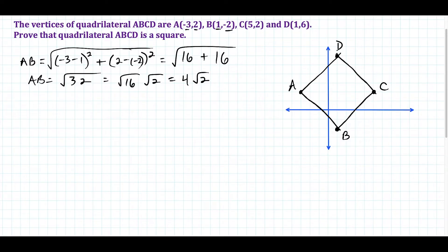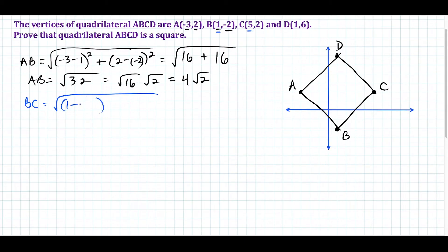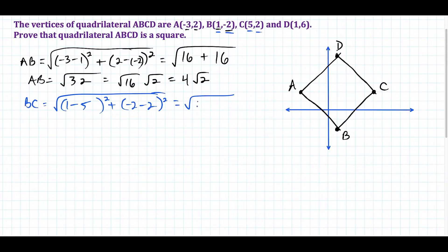Next we target side BC. We do the square root of the difference of the x values: 1 minus 5, squared, plus the difference of the y values: negative 2 minus 2, squared. Notice what we have under the radical is 16 plus 16 all over again. We already did the simplification — the square root of 16 plus 16 simplifies to 4 square root of 2. So this is a good sign that AB and BC are equal in length.